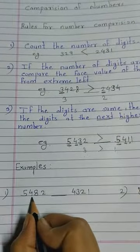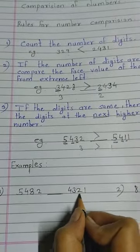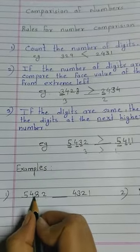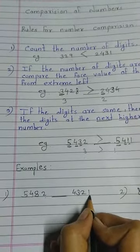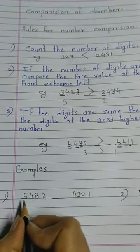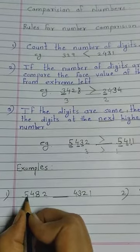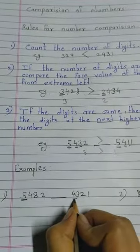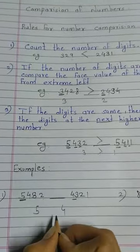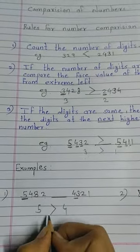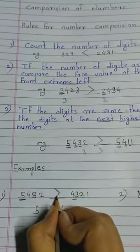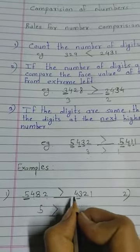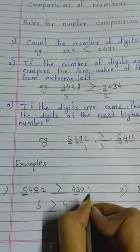Let's check with examples. First example: 5482 compared to 4321. Count digits — both are four-digit numbers. Compare from extreme left: five versus four — five is bigger. So the crocodile mouth opens towards 5482, meaning 5482 is bigger than 4321.